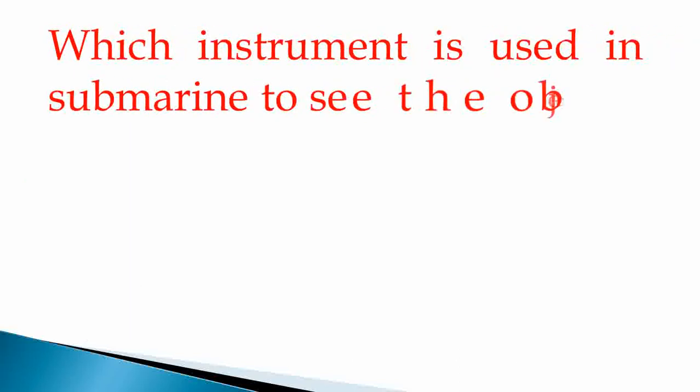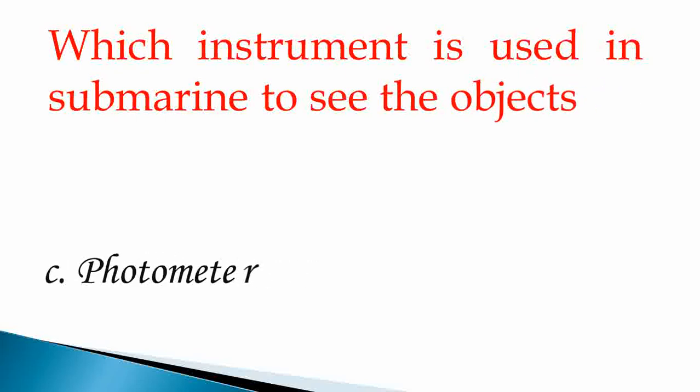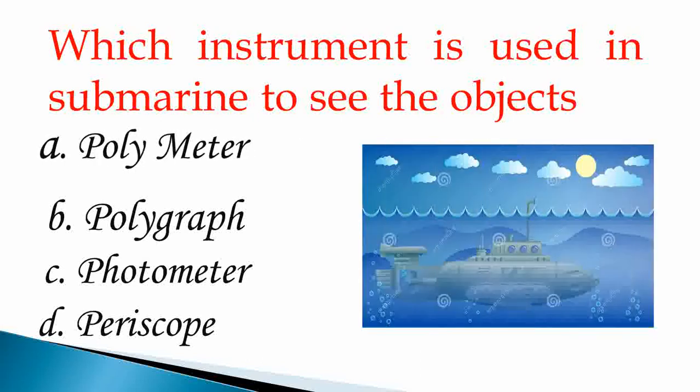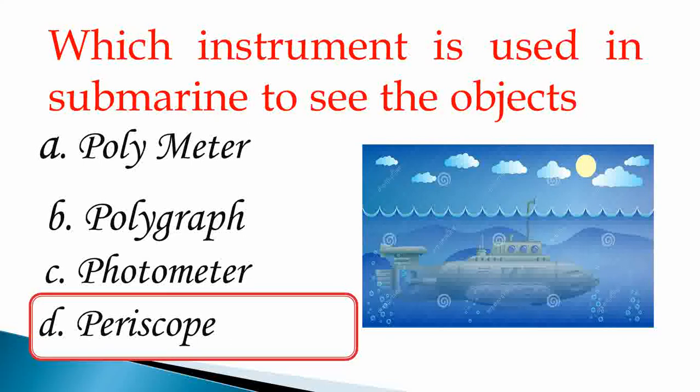Next one, which instrument is used in submarine to see the objects? A: Polymeter, B: Polygraph, C: Photometer, and D: Periscope. Answer is D, Periscope. Periscope is used in submarine to see the objects.